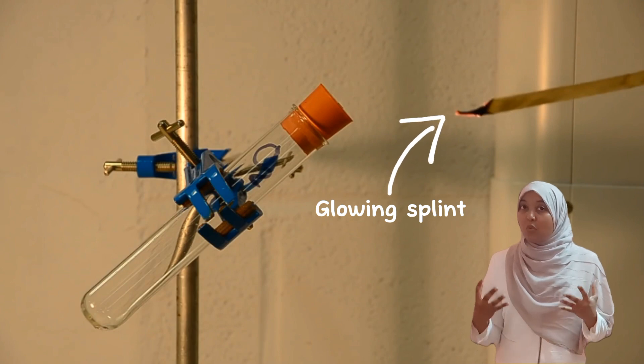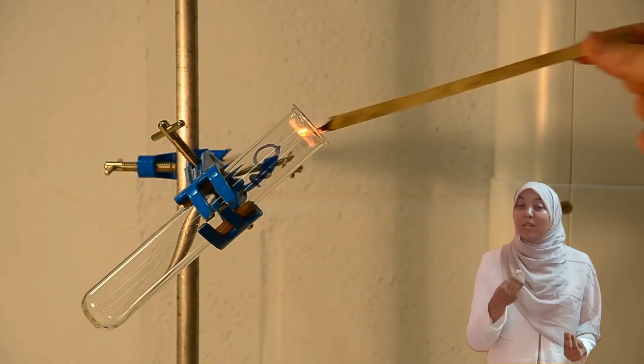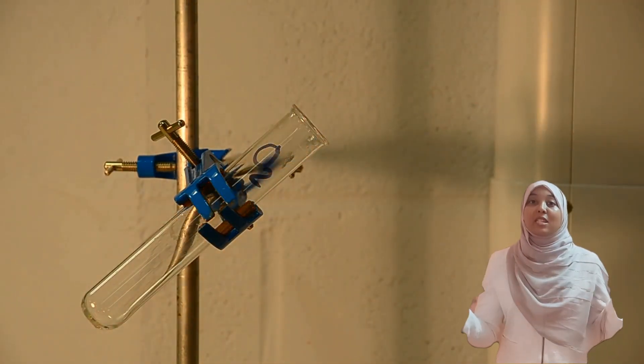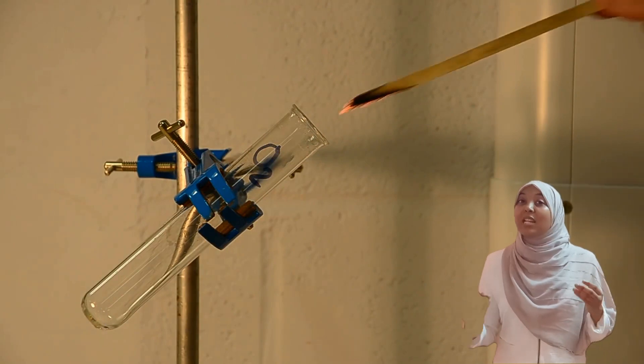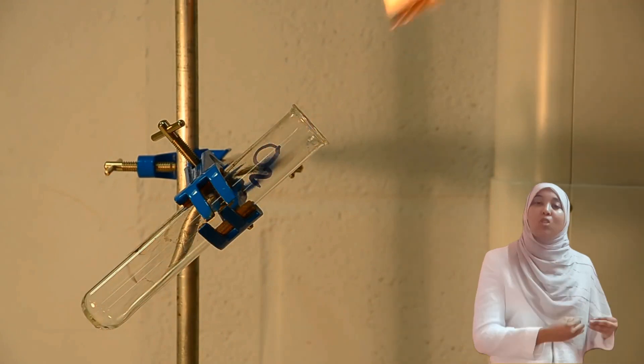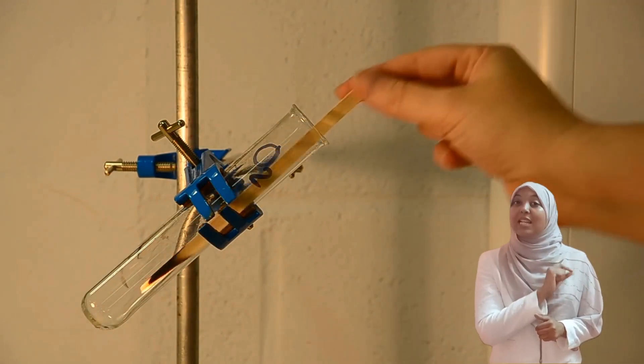Now, when you introduce a glowing splint in a container having oxygen, it's going to relight. So that is the test for oxygen. Remember, oxygen supports combustion, so when it relights, that means that oxygen gas is present. So the test for oxygen gas is that it relights a glowing splint, and that is the procedure you need to follow.